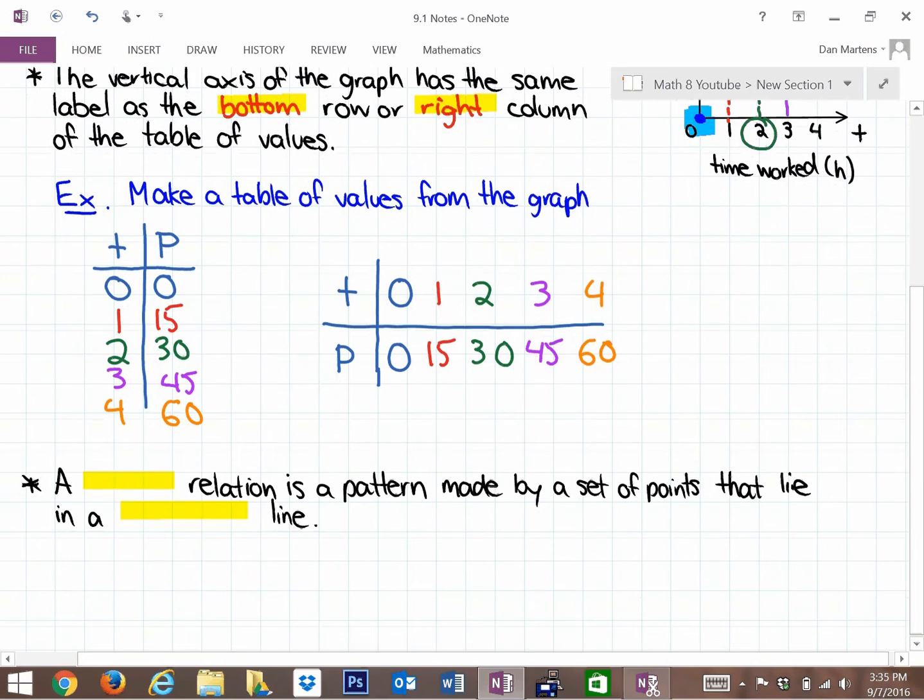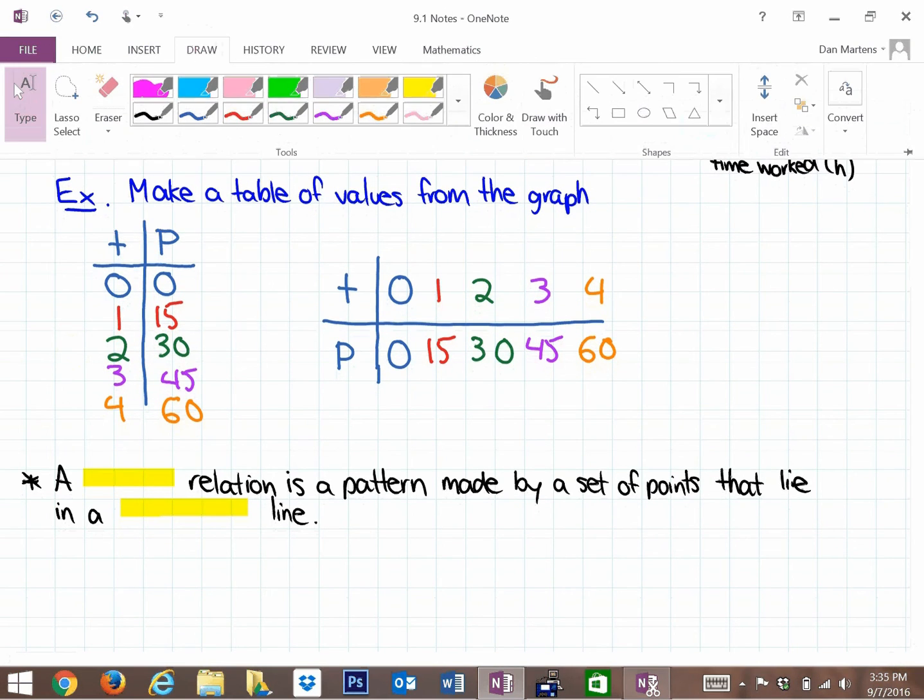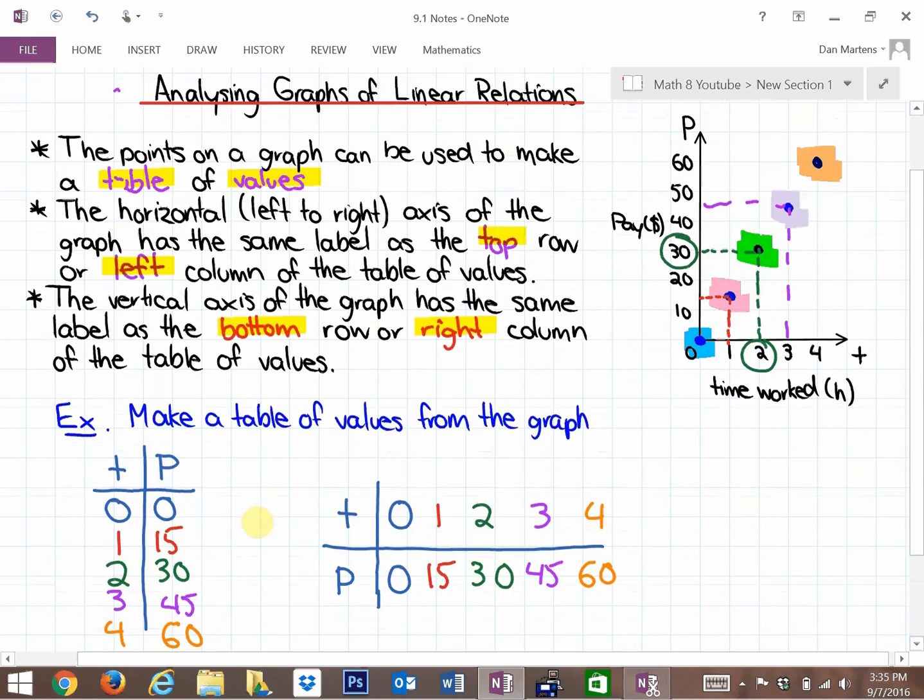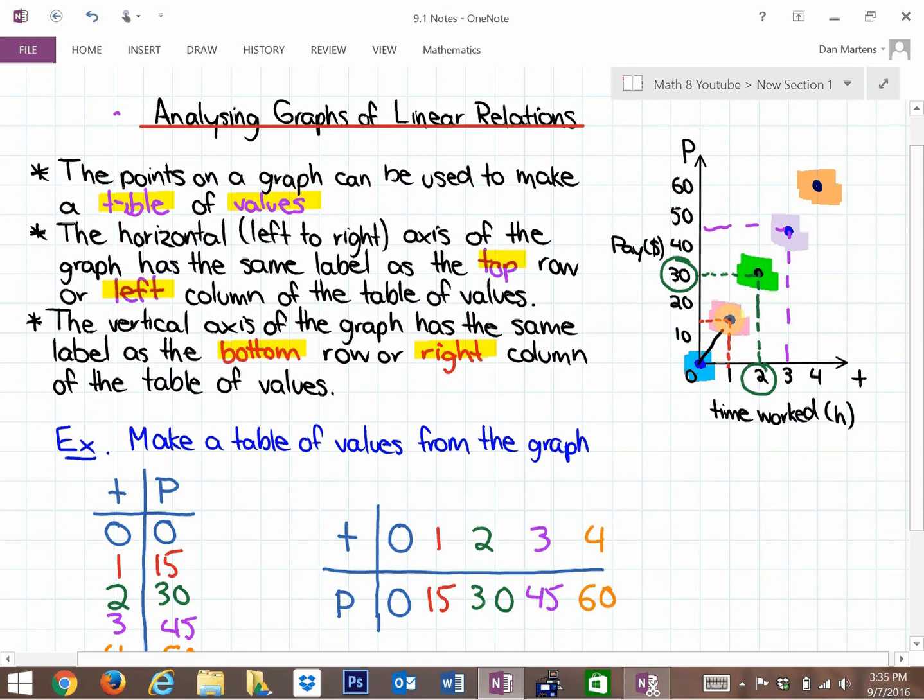The last thing to note here for this particular section is something specific to linear relationships. A linear relation is a pattern made by a set of points that lie in a straight line. What you notice about these points is that they all fall in a directly straight line.